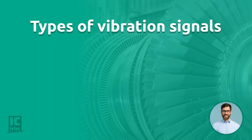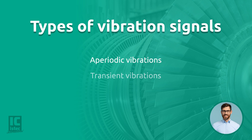We can divide different types of vibration signals that occur in the industry and its surrounding environment into three categories: aperiodic vibrations, transient vibrations, and periodic vibrations.